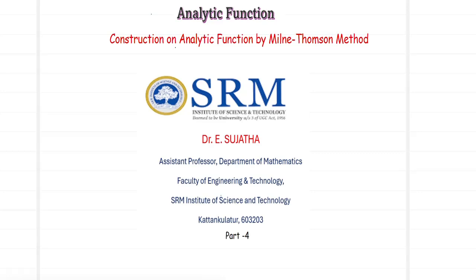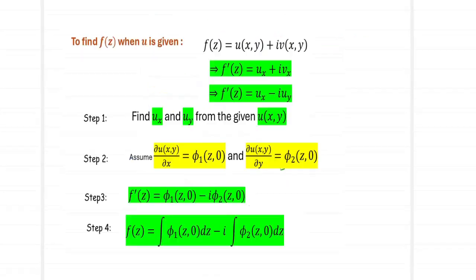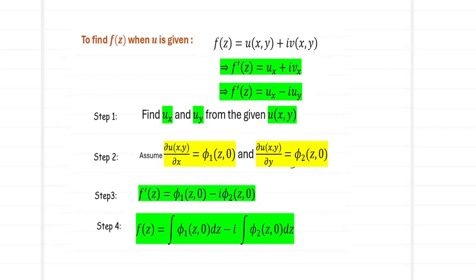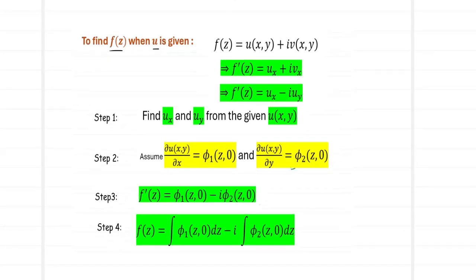Welcome to the second video on construction of analytic functions using the Milne Thomson method. In the first video, we found the analytic function f(z) when given the real part u or imaginary part v. When u is given, we followed four steps: first find partial derivatives u_x and u_y, then replace x with z and y with 0 to form phi1(z,0) and phi2(z,0), substitute into f'(z) = u_x - i·u_y, and integrate with respect to dz to get f(z).